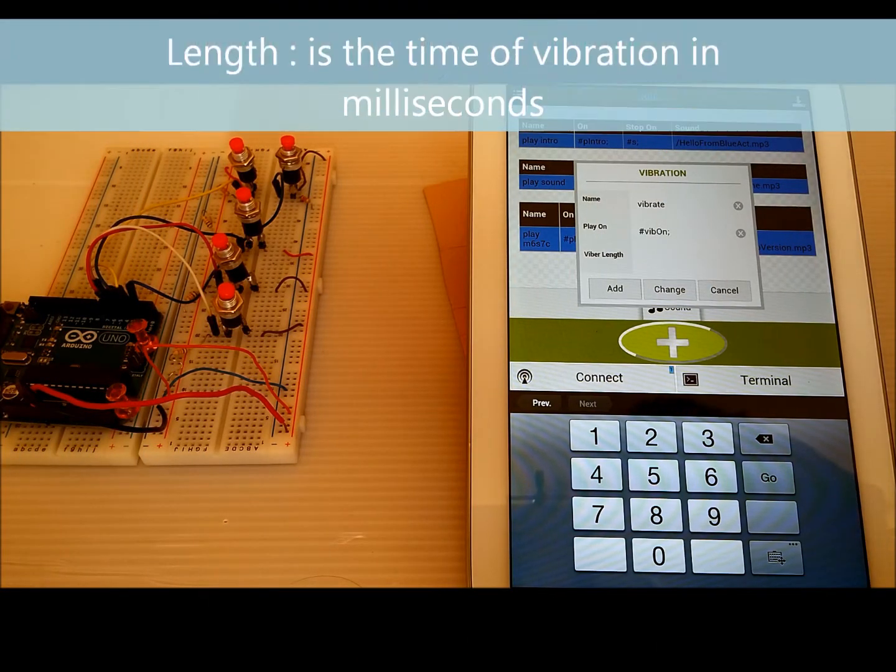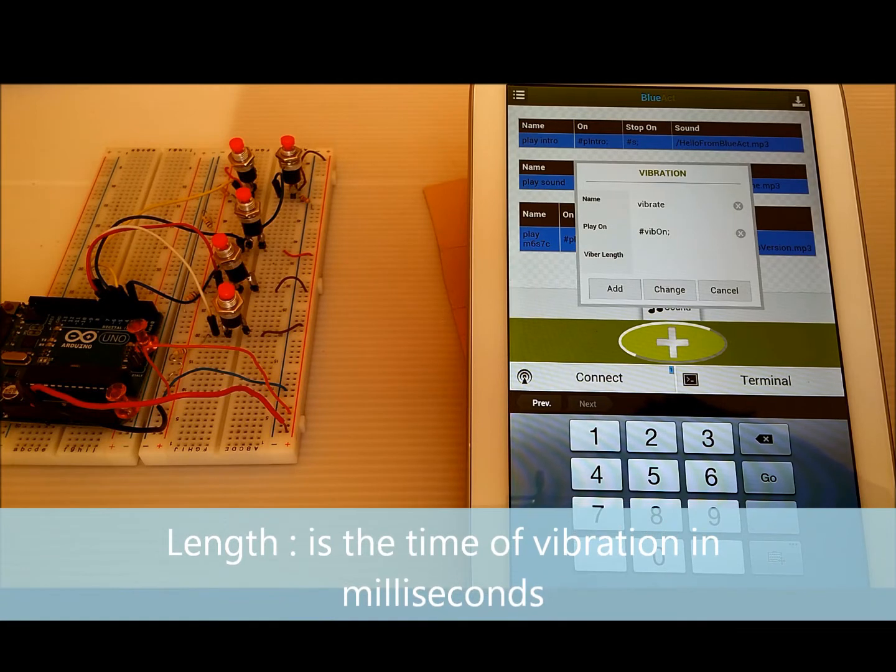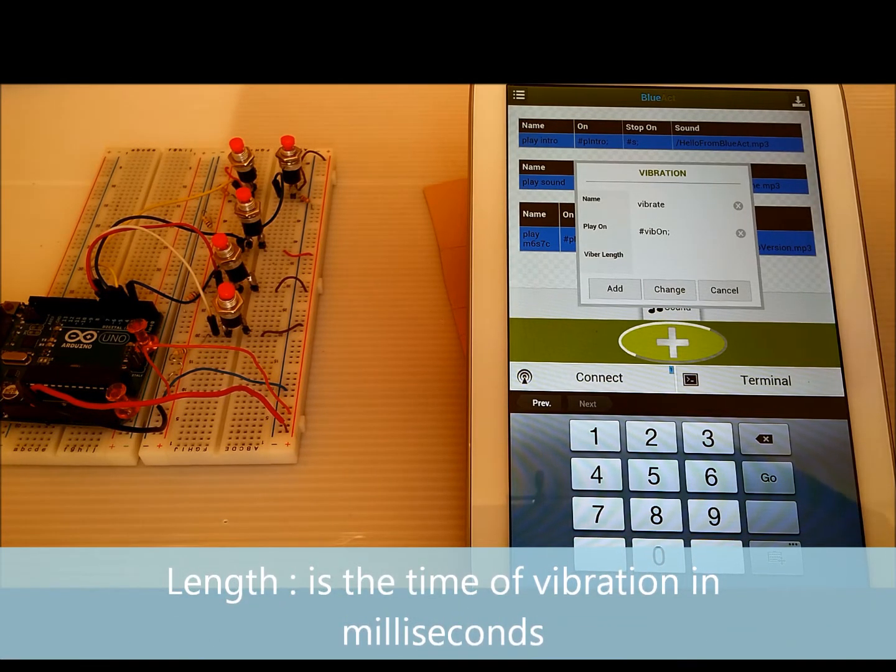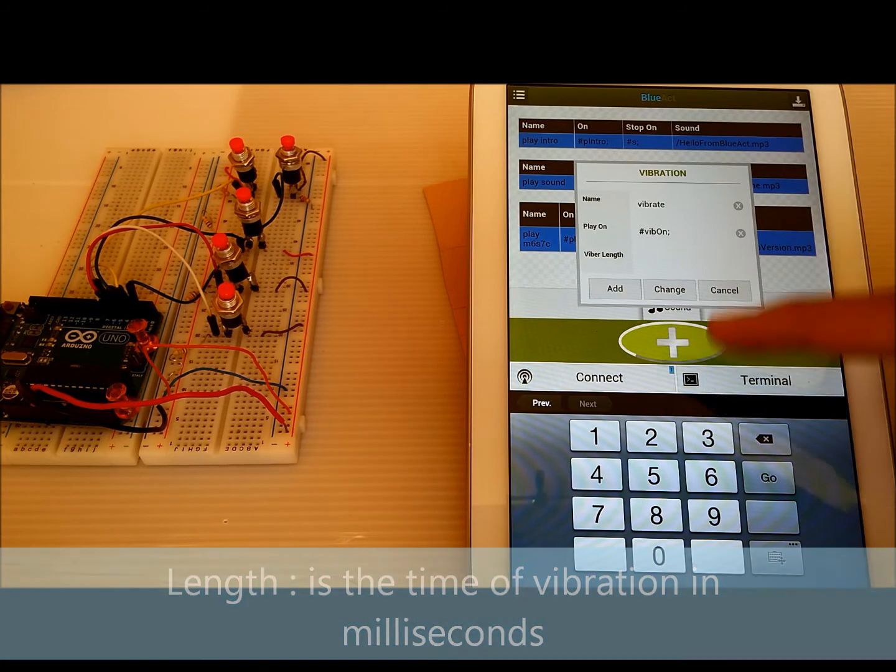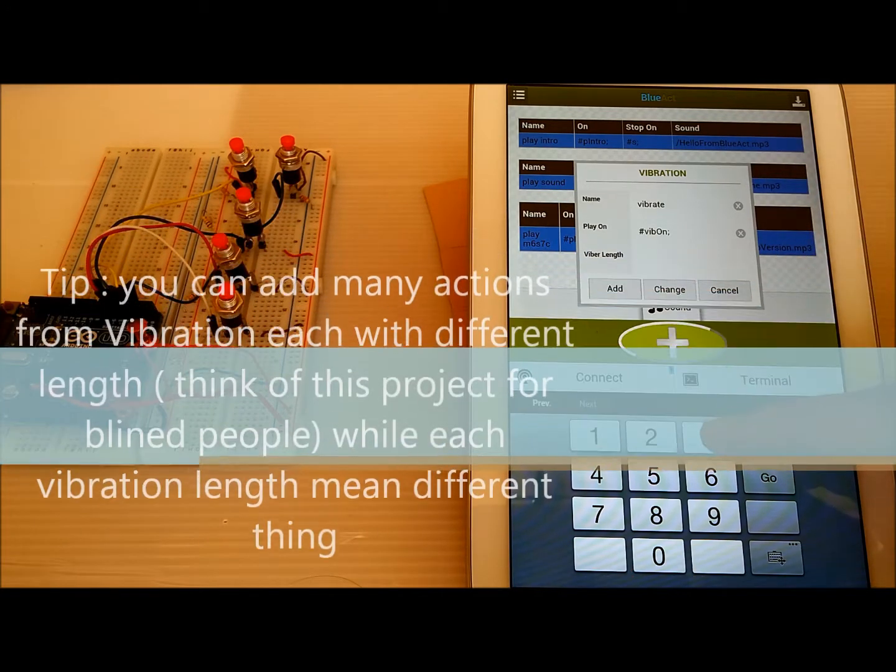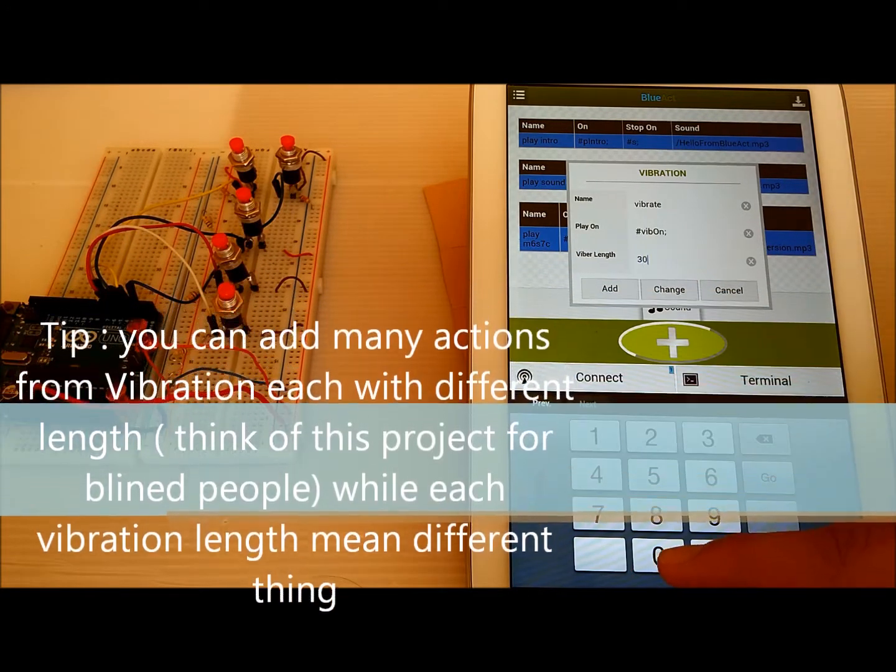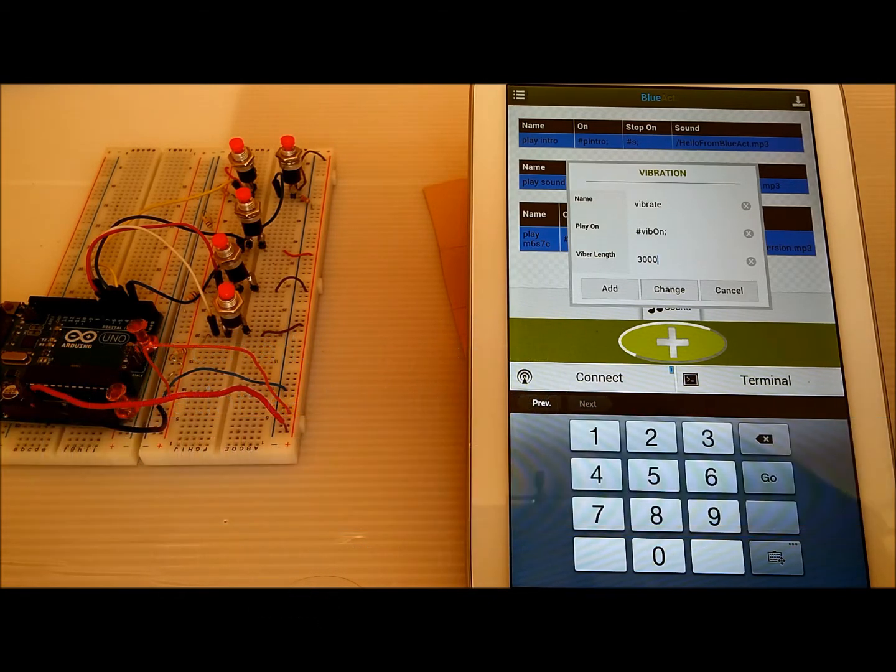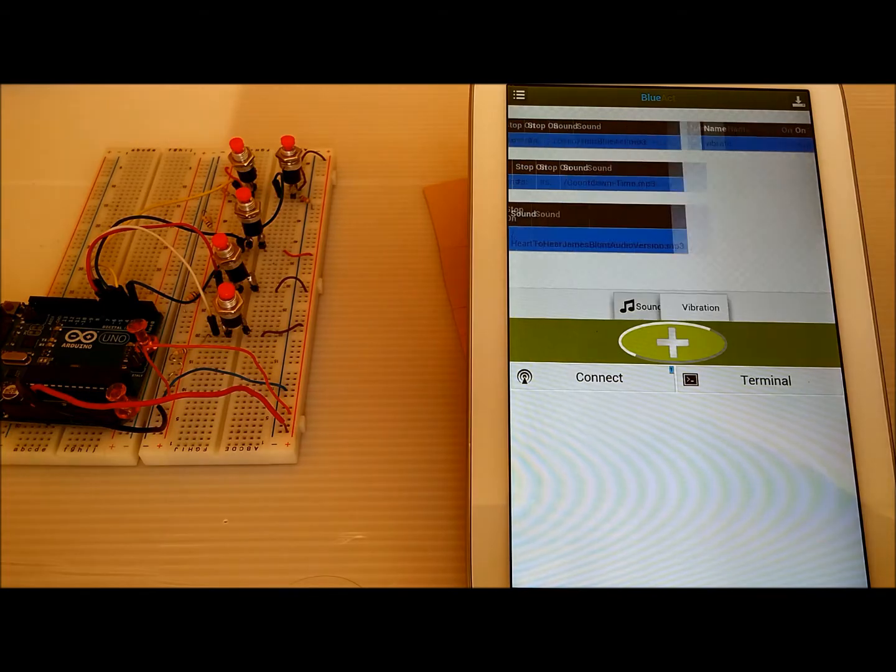Again it will add hash and semicolon automatically. The vibration length can be in milliseconds, so we will make it like vibration for, vibrate for three seconds, so basically three thousand milliseconds.